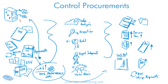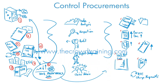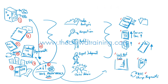To summarize: the inputs to Control Procurements are the project management plan, project documents, procurement documents, agreements, approved change requests, work performance data, enterprise environmental factors, and organizational process assets. The tools and techniques are data analysis, inspection, audits, expert judgment, and claims administration. The outputs are closed procurements, procurement document updates, project management plan updates, project document updates, work performance information, organizational process asset updates, and change requests. That is a review from Crowd Trainings of the Control Procurements process in the 6th edition PMBOK.